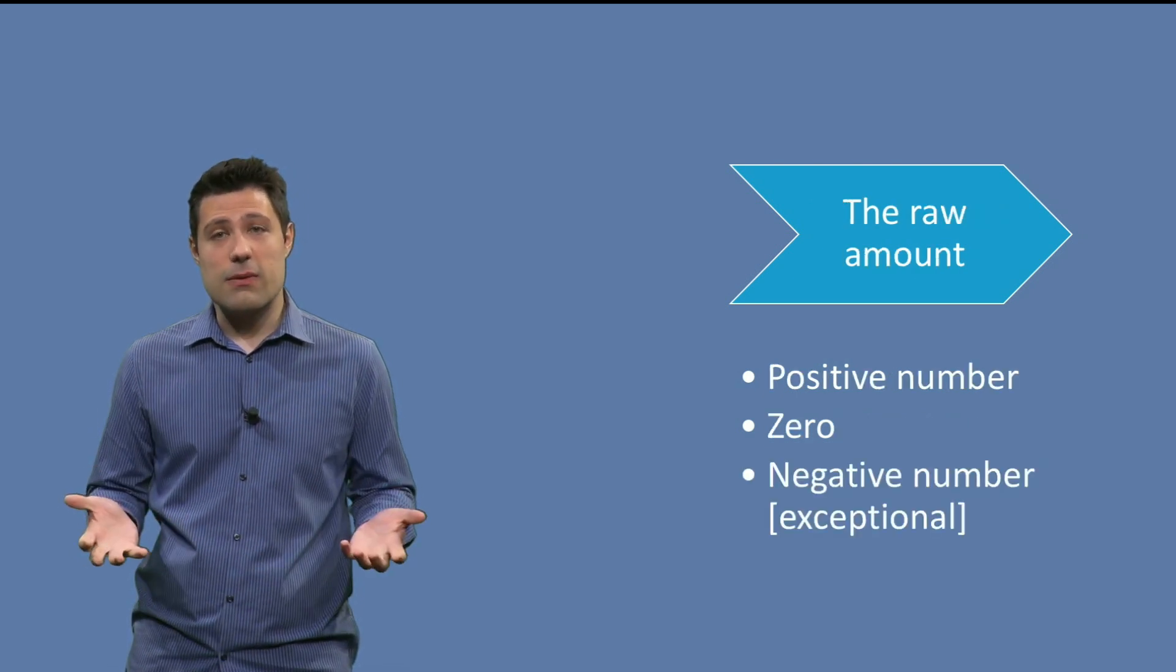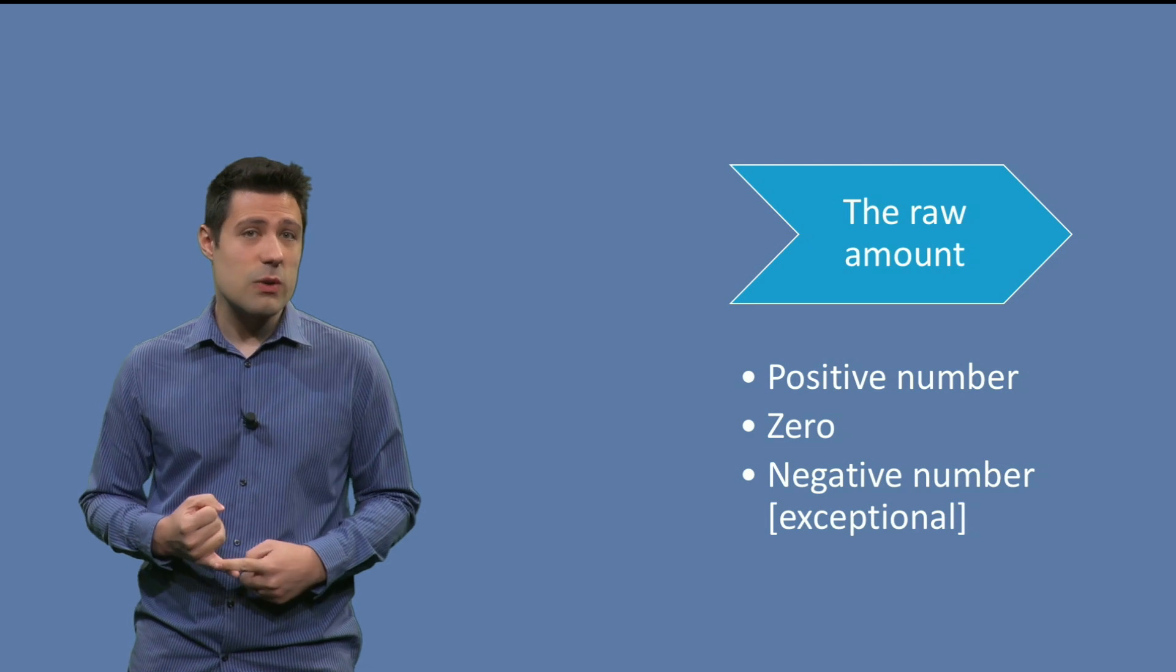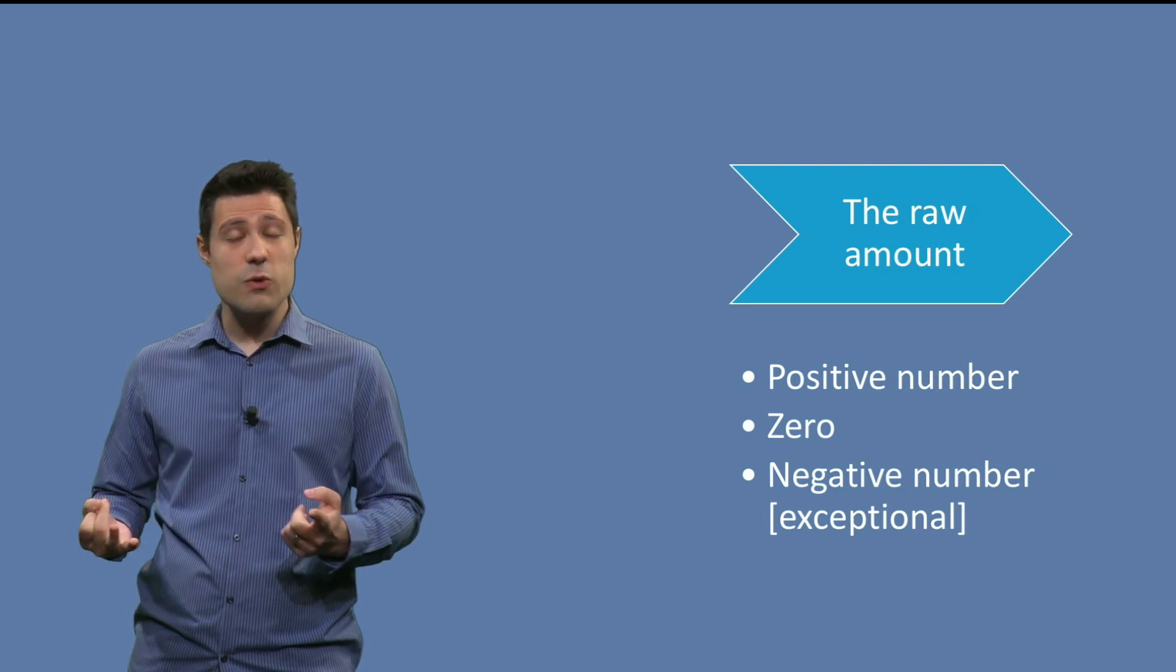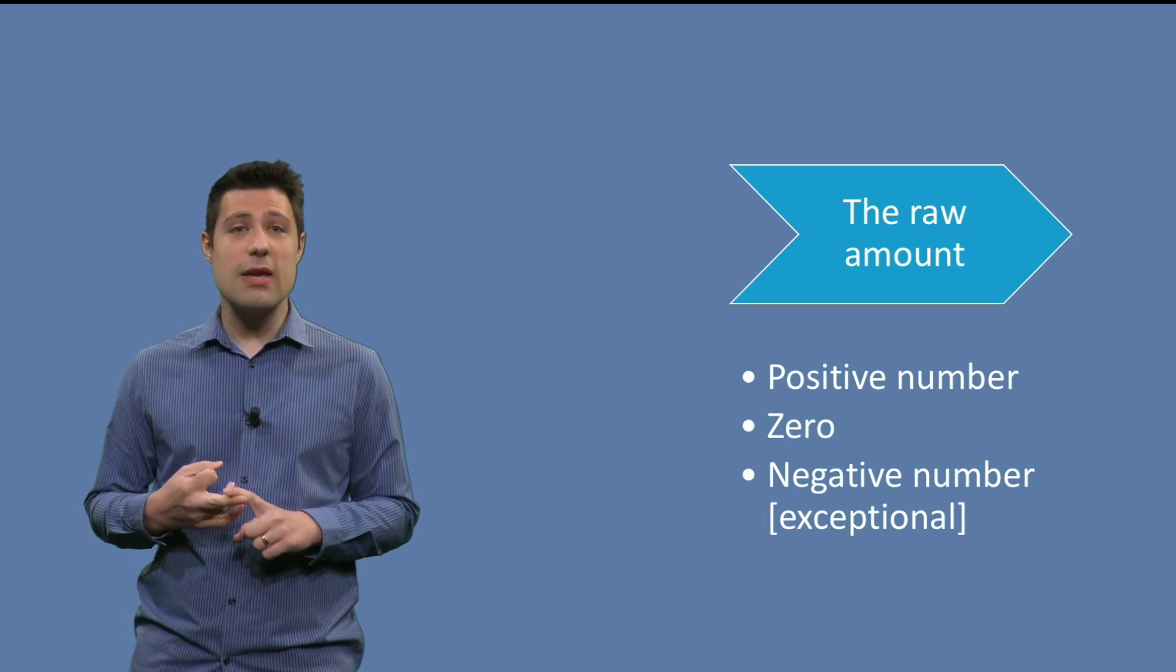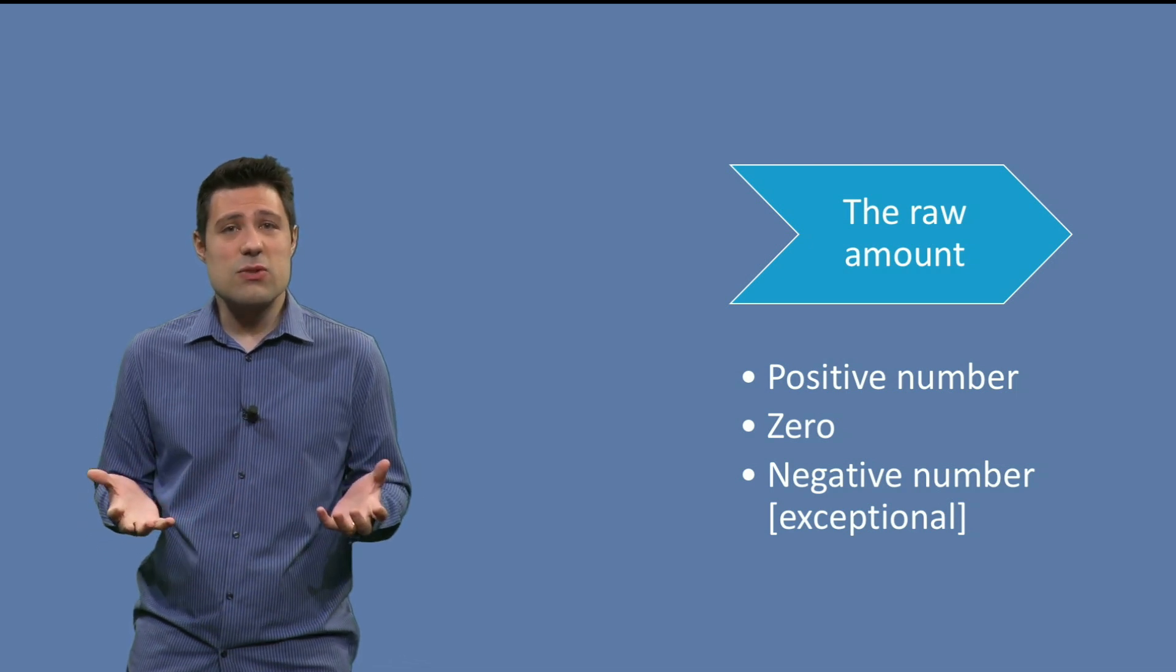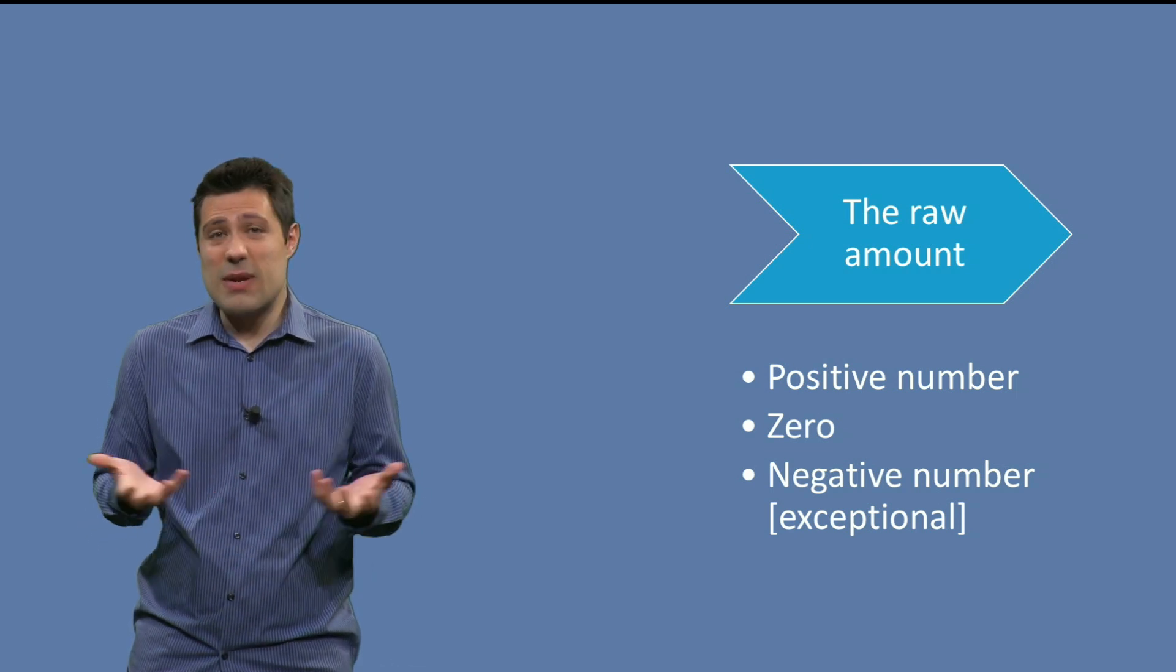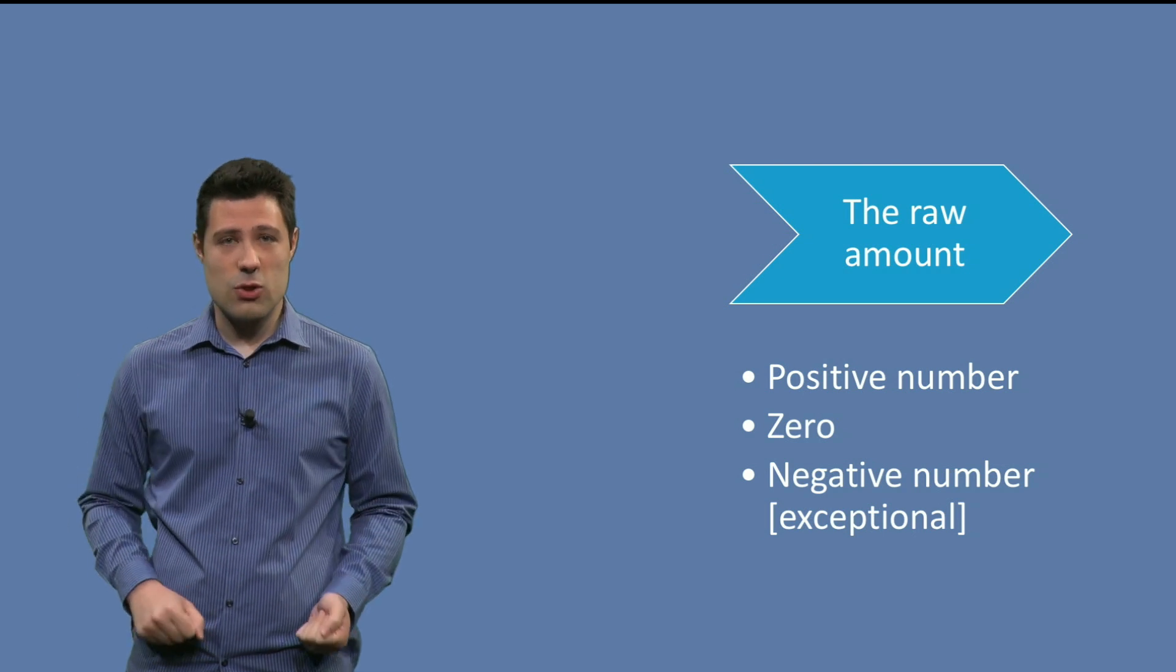And we have the amount. It can be a positive number like 100, it might be zero for some reason, or in an exceptional case it can be negative. But it doesn't make sense to have an amount be negative. But maybe that happens. And this is an exceptional behavior.